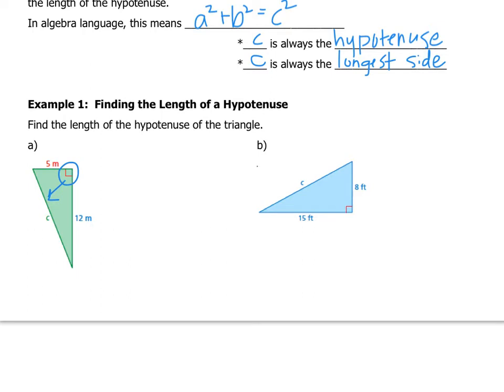So you plug in your information. I always like to write the formula first. a squared plus b squared equals c squared. I usually write that any time there's a formula. And then you plug in. It doesn't matter which one you call a and which one you call b, because they're interchangeable, but the c has to be the hypotenuse. So you do 5 squared plus 12 squared equals c squared. And then you just calculate. 5 squared is 25. 12 squared is 12 times 12. That's 144.